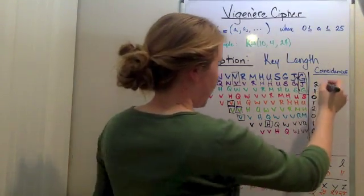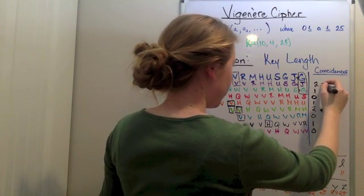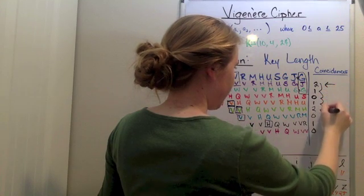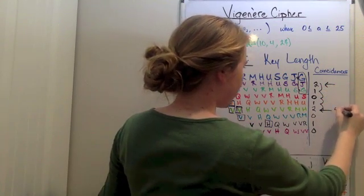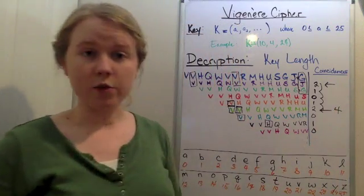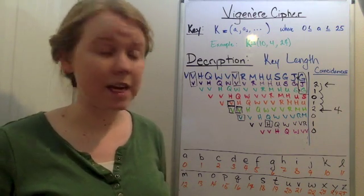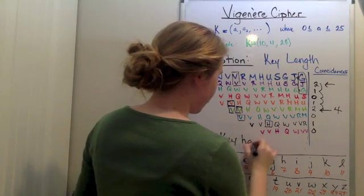Now what we want to do is count how often big numbers occur. So right now we have here and then one, two, three, four. So four places later, another big number occurs. Therefore, we would conclude that the key has a length of four.